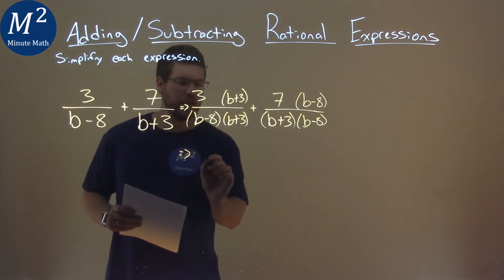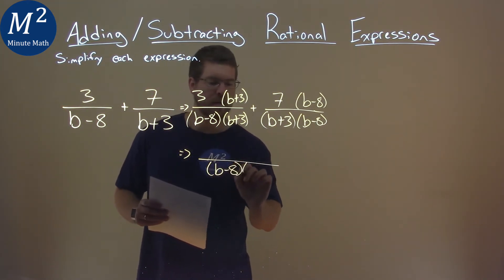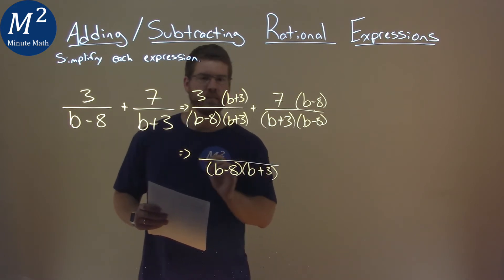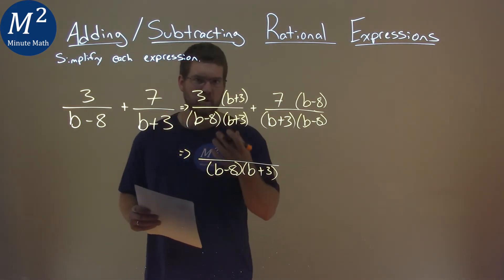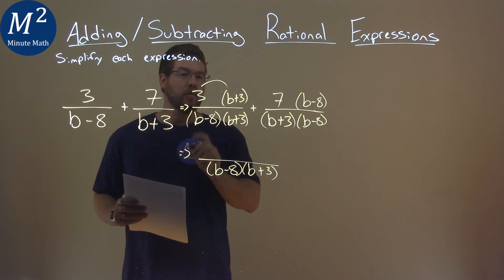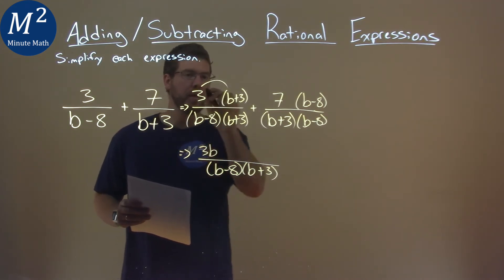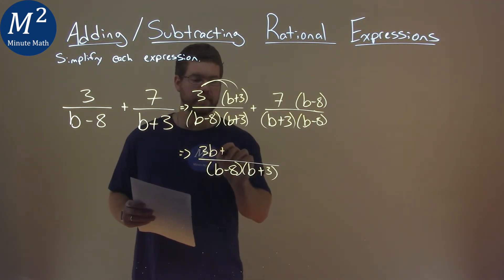So we can write that as one big fraction: b minus 8 times b plus 3. And we now have to simplify the numerator. 3 times b is 3b, and 3 times 3 is 9.